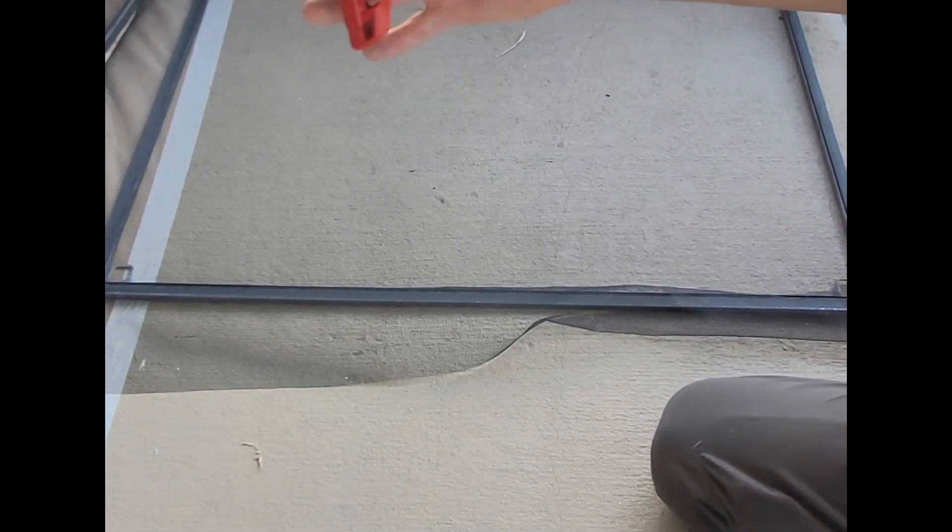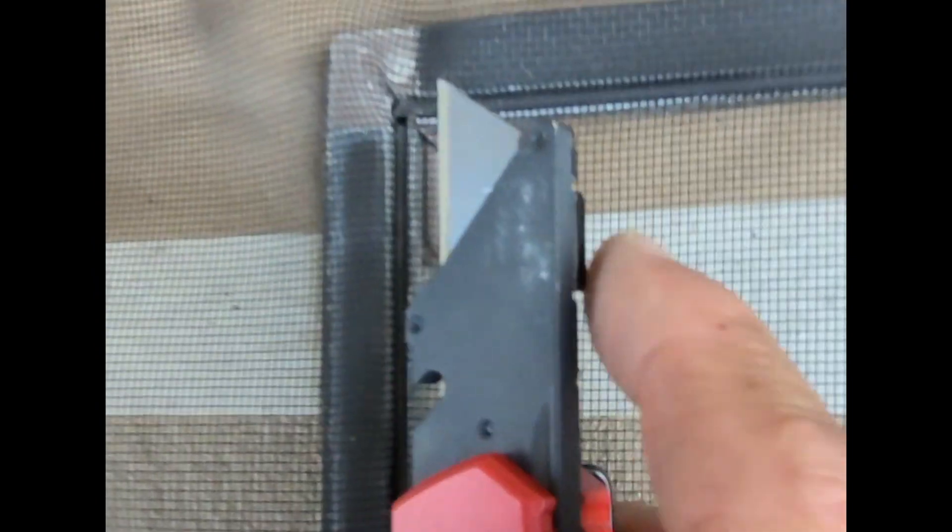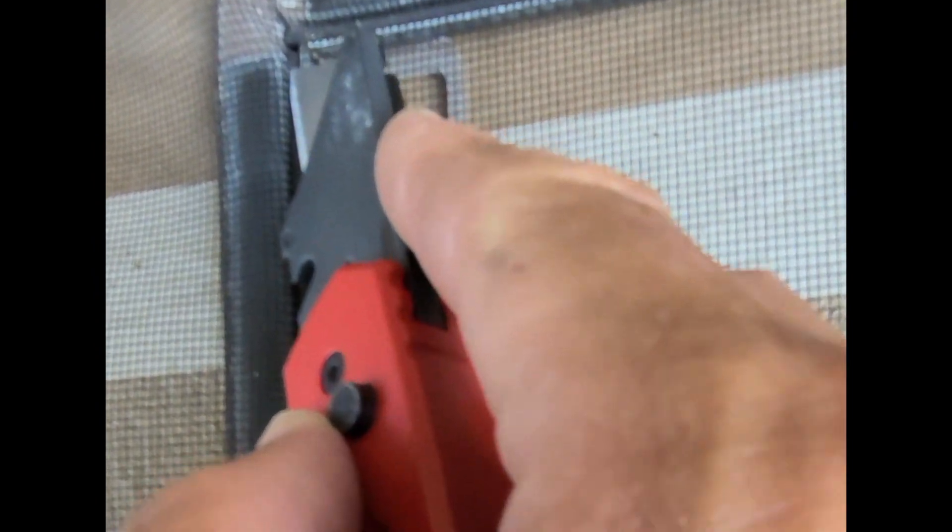Now it's time to take a nice fresh blade. Make sure your blade is brand new. You're going to want to cut right along the edge here, right on this outside edge right here. When you do that, you're going to take that frame and use it as a guide while you're pulling the knife against it.